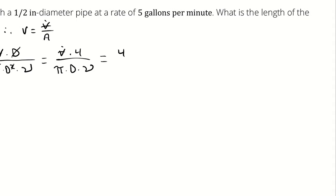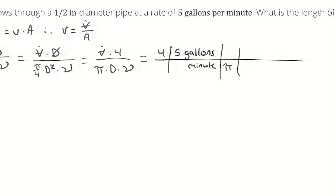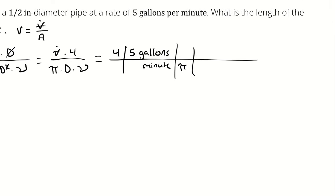That gives me 4 times 5 gallons per minute divided by pi times the diameter, which is 1 1⁄2 inch, times the kinematic viscosity for water.